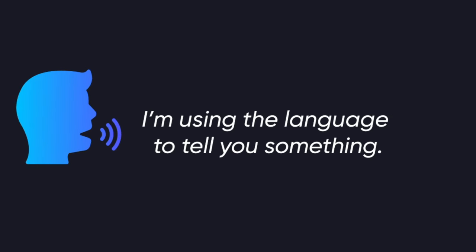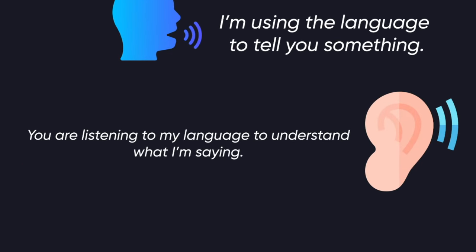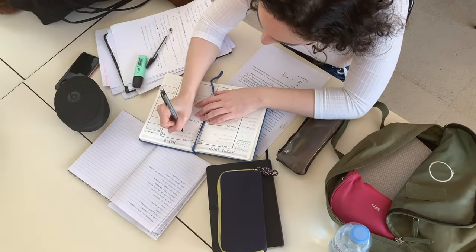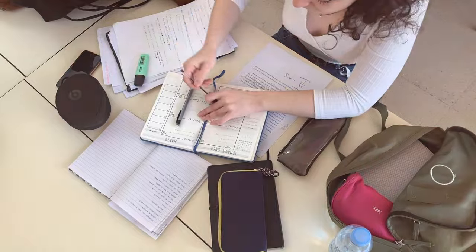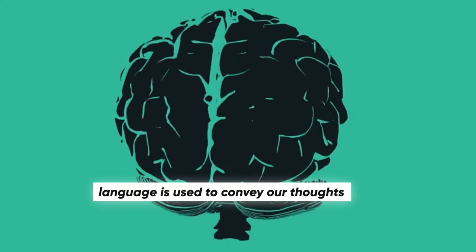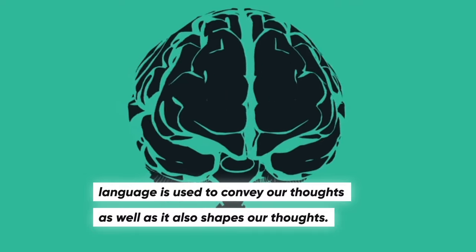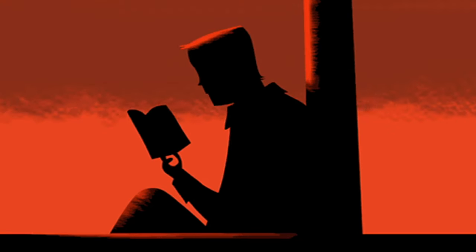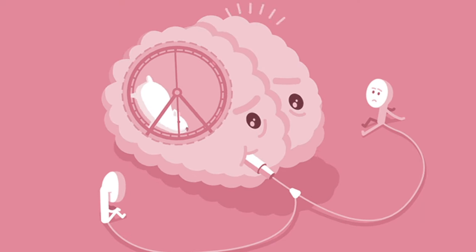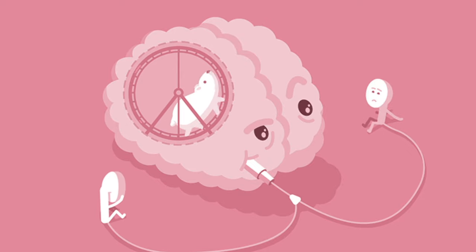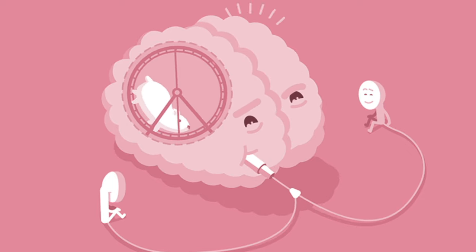Language is also used to understand reality. I am using language to tell you something, and you are listening to understand what I am trying to say. As you keep learning, your perception also changes. Language is used to convey our thoughts as well as to shape our thoughts. Every time we learn something through language, there is a change in our brain — language works at a cognitive level.